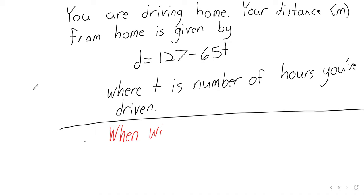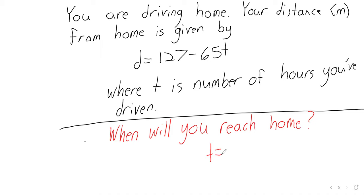When will you reach your home? How many hours will it take you to drive home? We have two variables: d is our distance, t is our time, and we're trying to solve for time — we want t equals something as our solution. So we have to make a slight leap here. d is our distance from home, so when we reach our home, what is d going to be?